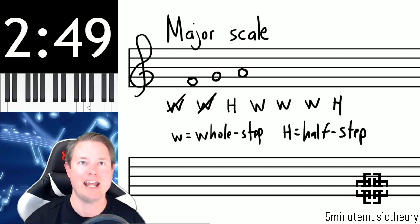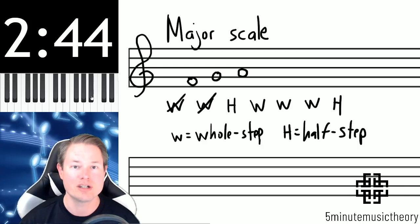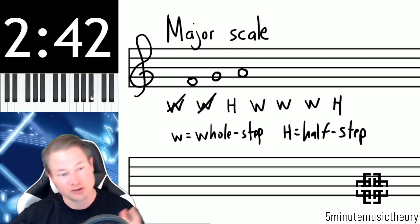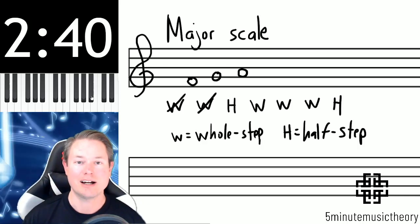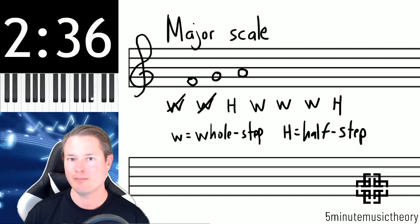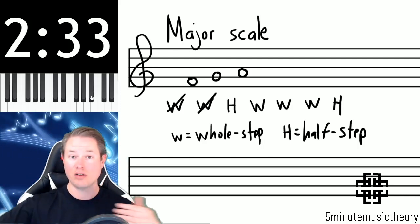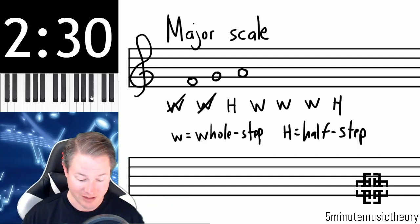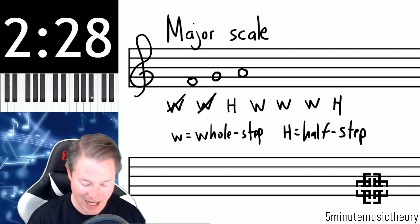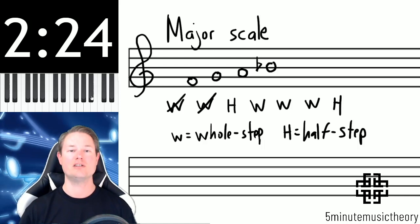A half step above A is either A sharp or B flat. The way that we choose is this basic idea: we don't want to represent any of the letters of the alphabet more than one time in a diatonic scale. We use all seven letters and all seven letters only once. Since we already used the letter A, the next note is going to be a B flat, not an A sharp. That's our half step.